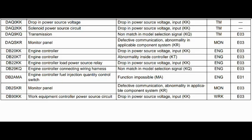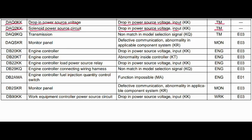Code DAQ0KK: Problem is a drop in power source voltage input. Transmission control is related to this code. Code DAQ2KK: Problem is the solenoid power source circuit — drop in power source voltage input. Transmission control is related to this code. Code DAQ9KQ: Problem is the transmission — non-match in model selection signal. Transmission control is related to this code.